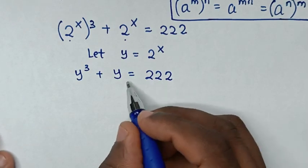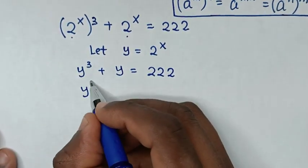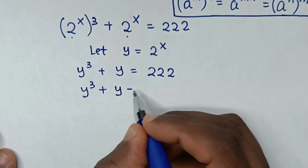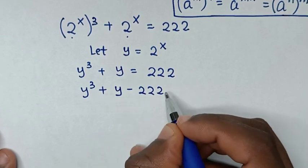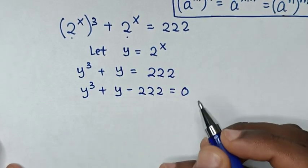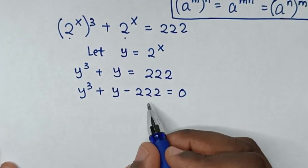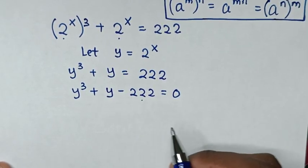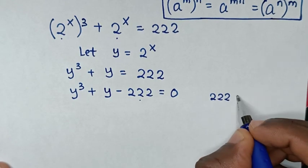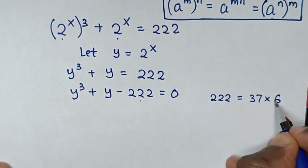We take 222 to the left side, giving y cubed plus y minus 222 equals 0. We solve this cubic equation by factorization. Note that 222 equals 37 times 6.